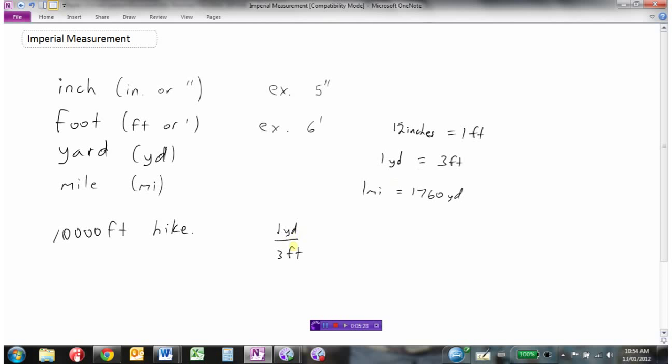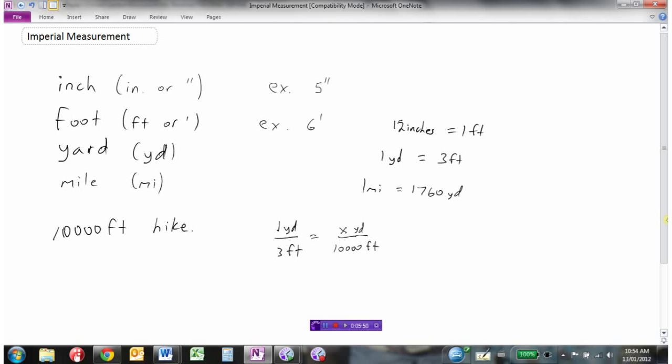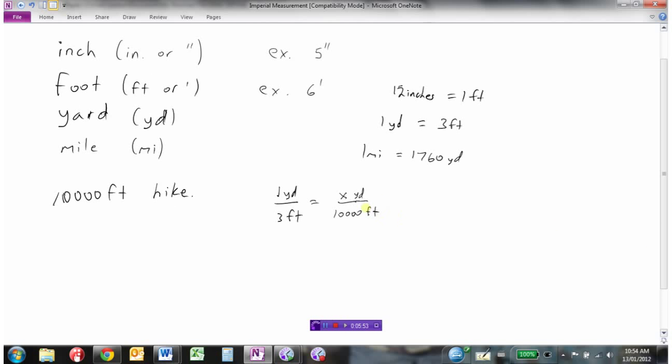I'm going to have my yards over my feet, so I have an unknown amount of yards over 10,000 feet. One yard is to three feet as x yards is to 10,000 feet. To isolate x, I just need to multiply both sides by 10,000. I get x equals 10,000 times 1, which is 10,000 divided by 3.